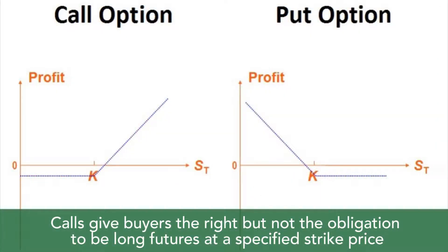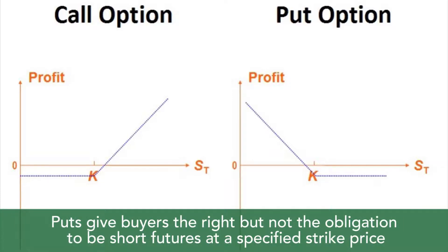Calls give the buyer the right but not the obligation to be long futures at a specified strike price. For example, if you went long corn at $4 and dry weather sends corn futures to $8, you could opt to own a long futures position at $4 and then get rid of that position at $8. Puts give buyers the right but not the obligation to be short futures at a specified strike price. Option prices are called premiums and are negotiated by the buyers and sellers.